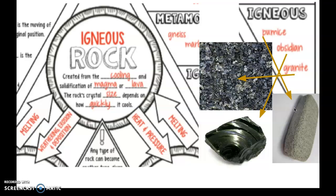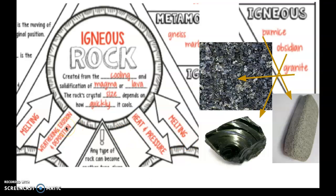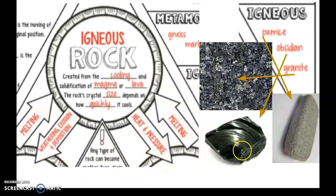So if I have a rock with really large crystals, then it cooled really slowly. If I have a rock with no crystals or very small crystals like our obsidian right here, it cooled really, really quickly. Let's also make sure we're filling in these arrows right here. We can transform one type of rock — like a sedimentary or metamorphic rock — into igneous rocks by melting them.